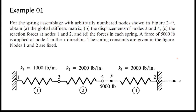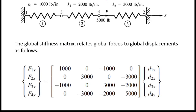Hello everyone. In this video I am going to show you how to obtain the displacements of nodes 3 and 4. In the previous video I showed you how to obtain the global stiffness matrix, so this is the second video. We will see how to obtain displacements of nodes 3 and 4. This is a truss system, and the global stiffness matrix relates global forces to global displacements as follows — this is the matrix form of the equation F equals KD.